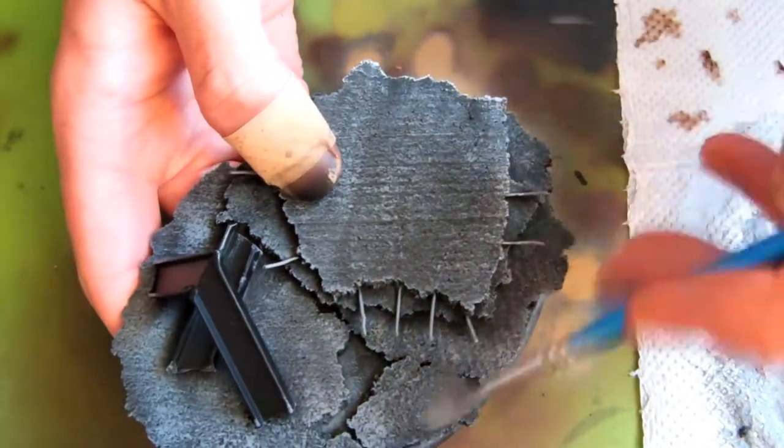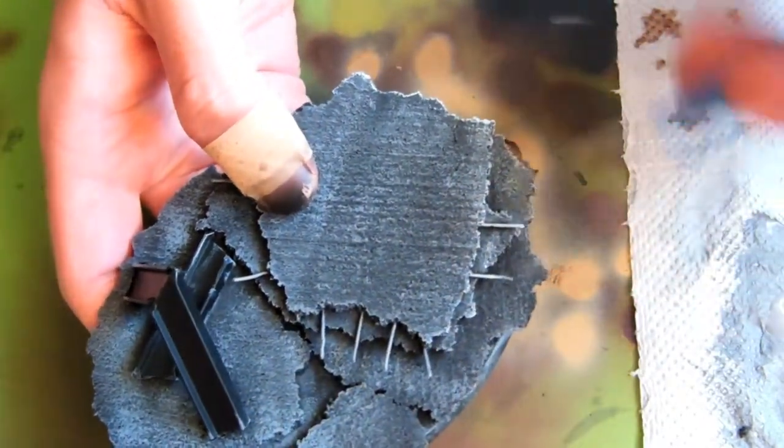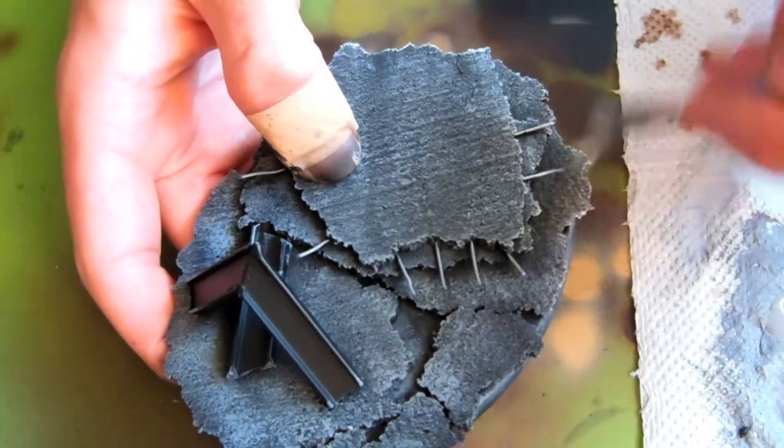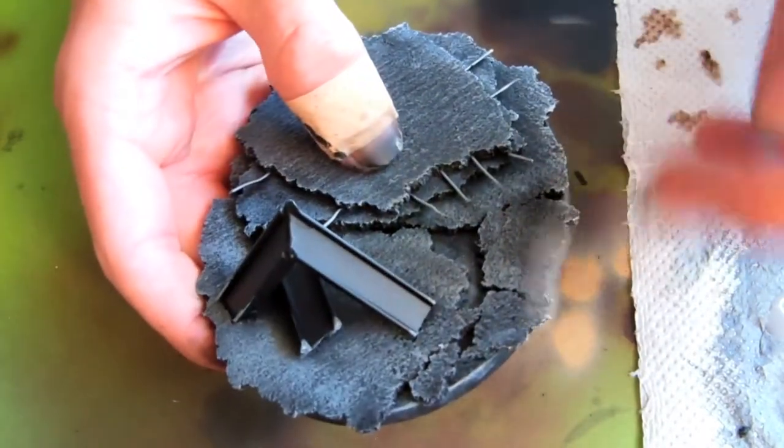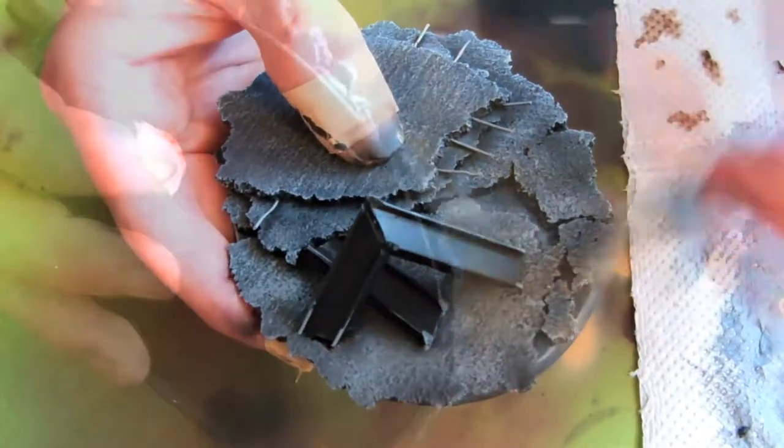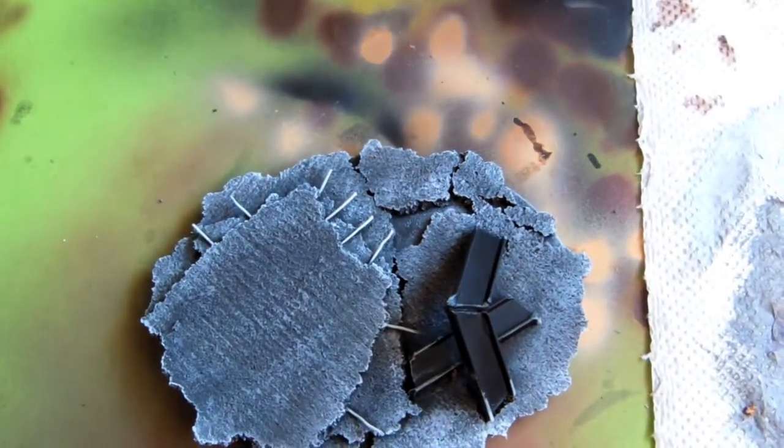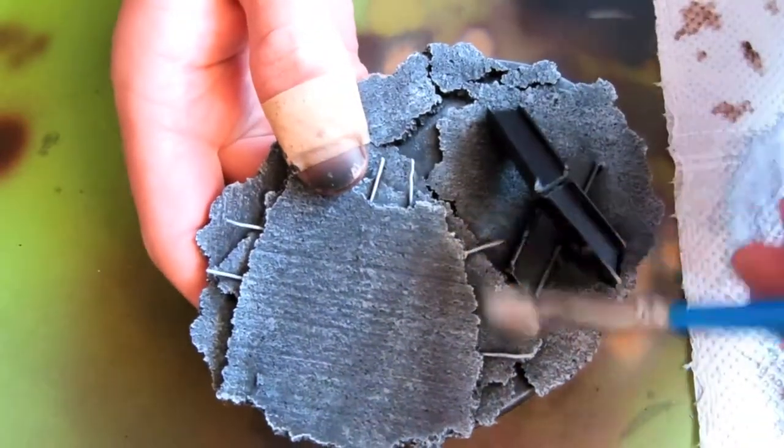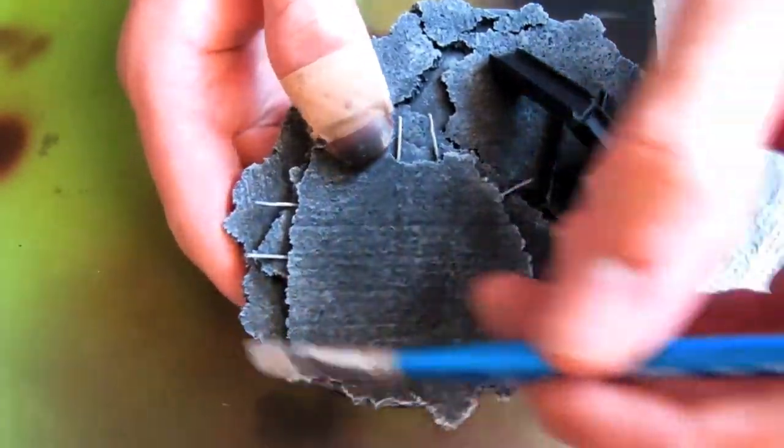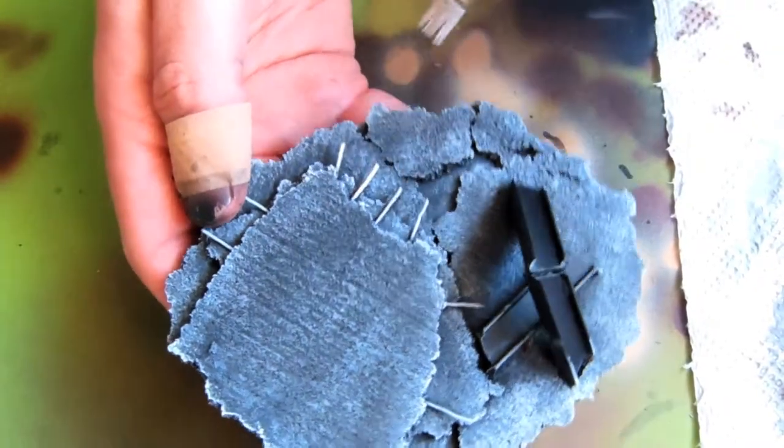I then used Warf Grey from Vallejo Game Color, going around picking out some of the edges on the concrete. Final step on the dry brushing was just picking out a couple of random edges with some white.